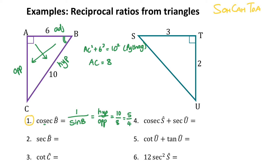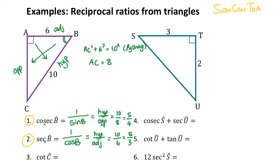Next question, number 2: sec of B, using the same angle. Sec relates to cos of B. Cos of B is normally adjacent over hypotenuse, but because I'm looking at the reciprocal, it will be hypotenuse over adjacent. My hypotenuse is 10 and my adjacent is 6, so I get 5 out of 3.